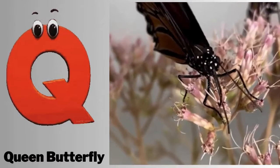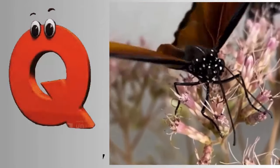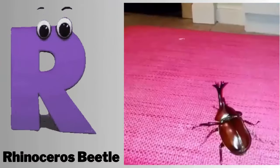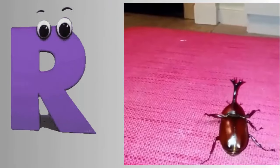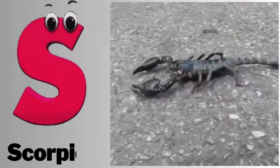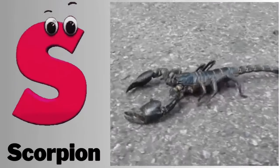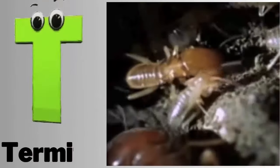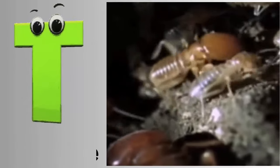Q. Q for queen butterfly. R. R for rhinoceros beetle. S. S for scorpion. T. T for termite.